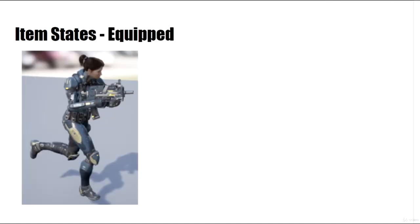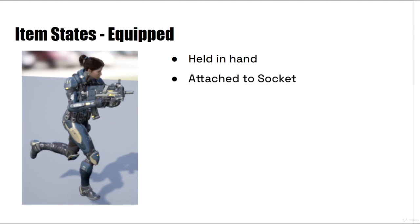The first state we're going to be concerned with is the equipped state. This is the state we're familiar with because our character already has a weapon equipped. We've spawned a default weapon and attached it to the right hand socket we've created, and we're going to consider this to be the equipped state for our weapon — it's going to be held in our hand, attached to the socket.